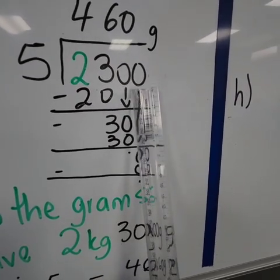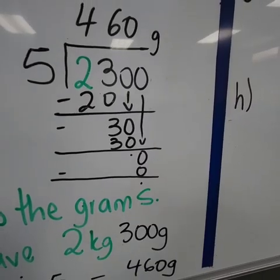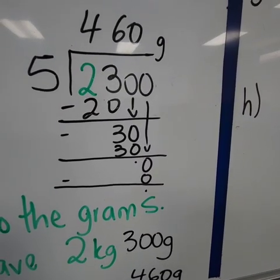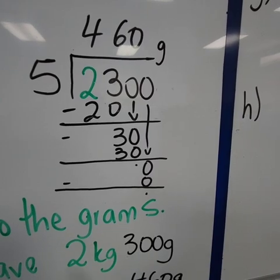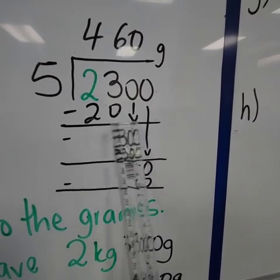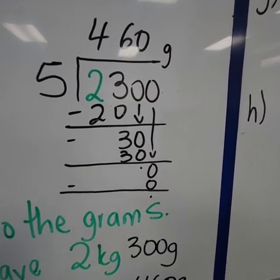Then we bring down the next digit, which is 0. And remember, 0 counts as a certain value. Because now it makes this whole number become 30.